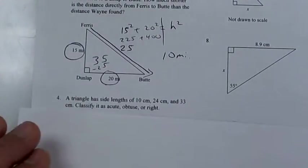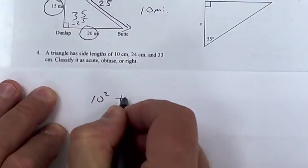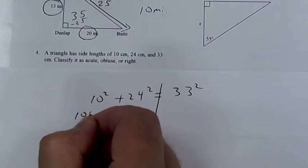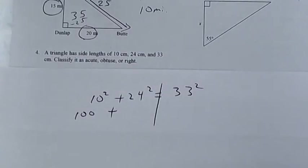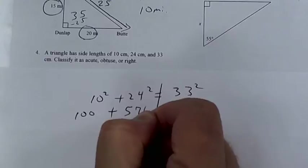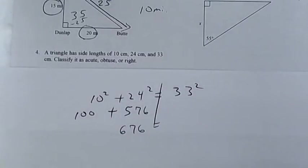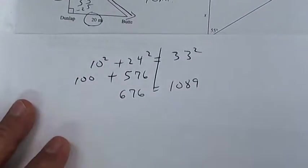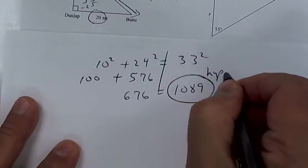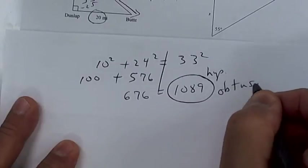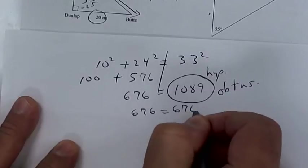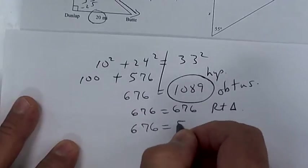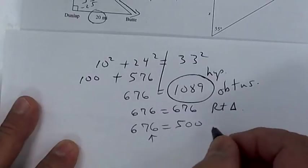Number 4 — classify the triangle. You're going to use Pythagorean's theorem. So 10 squared plus 24 squared equals 33 squared. That's 100 plus 576, which gives you 676. But when you take 33 and square that, you get 1089. Since the hypotenuse side is bigger, it is obtuse. If they were equal — like 676 equals 676 — then you would say a right triangle. And if this side was bigger, like 676 equals 500, then the legs would be bigger, therefore it would be acute.